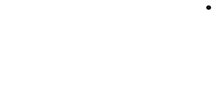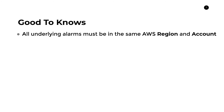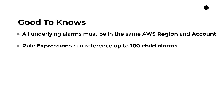Now for some good-to-knows — limitations and pricing. First, all underlying alarms must be in the same AWS region and the same account. This may be a problem if you own multiple applications across multiple accounts, as creating a composite alarm that stretches across accounts is unfortunately not supported at this time. Hopefully AWS will add cross-region and cross-account support in the future. Second, rule expressions can reference up to a maximum of 100 child alarms — that's a hard limit.